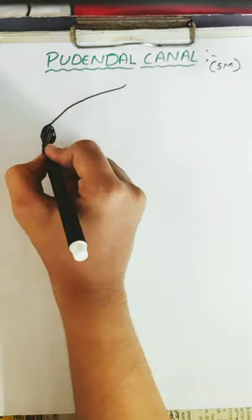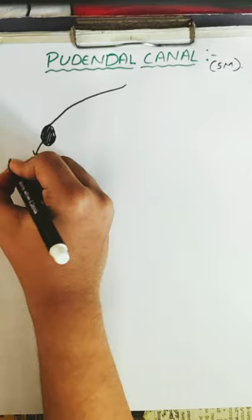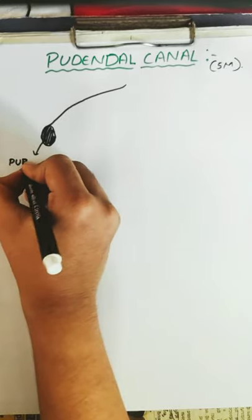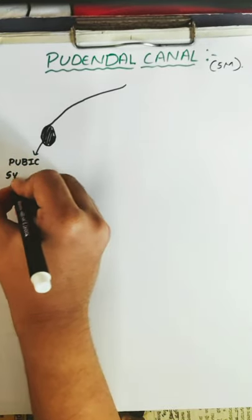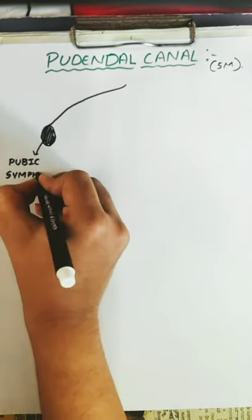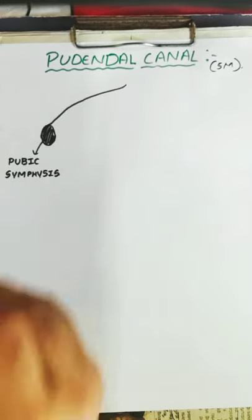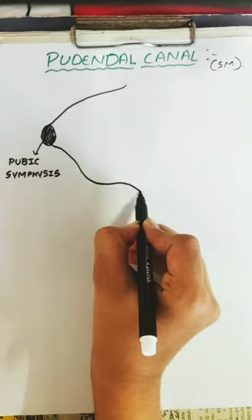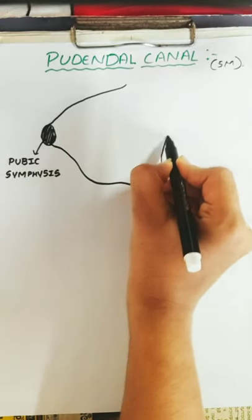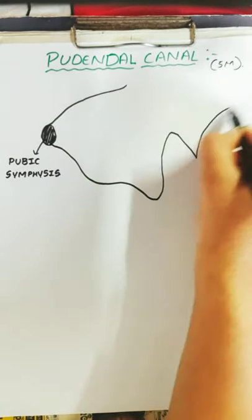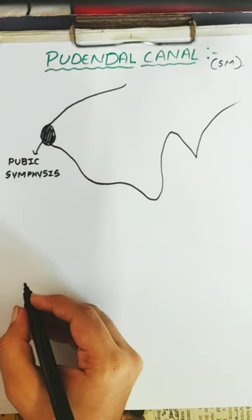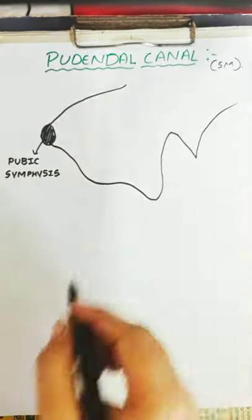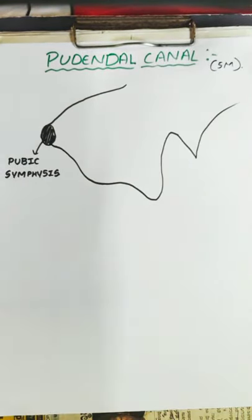This is the pubic symphysis. We are done with the pubic symphysis. After that, I'll draw a quite big diagram so that you can understand. These are the ischial bones. Remember these two structures.